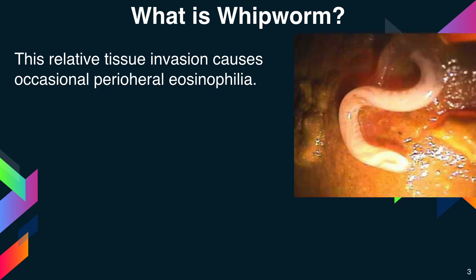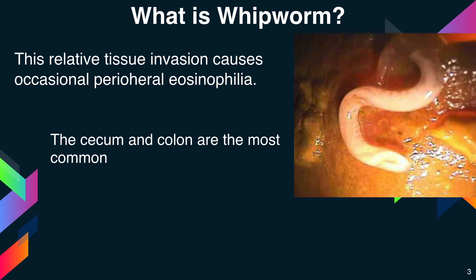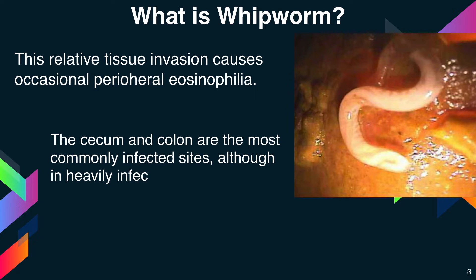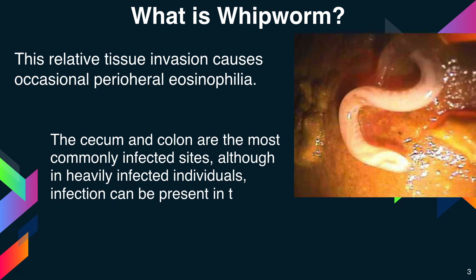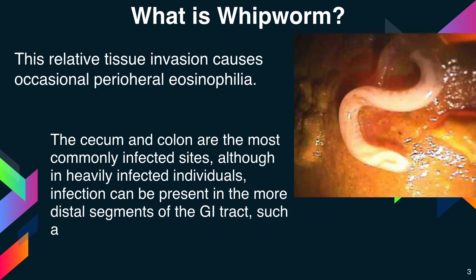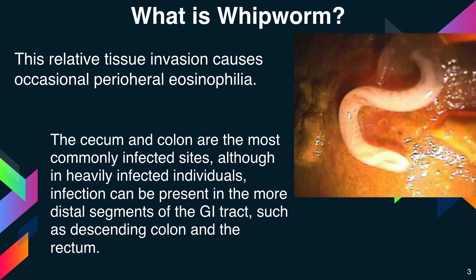The next slide shows whipworm present inside the intestine. The cecum and colon are the most commonly infected sites. Although in heavily infected individuals, infection can be present in the more distal segments of the GI tract, such as the descending colon and the rectum.